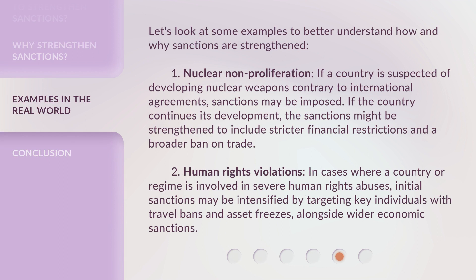Let's look at some examples to better understand how and why sanctions are strengthened. First, nuclear non-proliferation: if a country is suspected of developing nuclear weapons contrary to international agreements, sanctions may be imposed, and if the country continues its development, the sanctions might be strengthened to include stricter financial restrictions and a broader ban on trade. Second, human rights violations: in cases where a country or regime is involved in severe human rights abuses, initial sanctions may be intensified by targeting key individuals with travel bans and asset freezes, alongside wider economic sanctions.